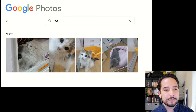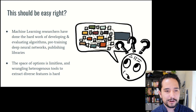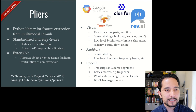What if we were able to apply this to naturalistic datasets and automatically label them? In some ways this should be fairly easy, because machine learning researchers have already done the hard work — developing and evaluating algorithms, pre-training deep neural nets, and publishing both the pre-trained networks and libraries to interface with them. The space of options is limitless, but wrangling all these heterogeneous tools with different usage patterns and installation requirements becomes a barrier. To address this, we've developed a library called pliers — a Python library for feature extraction from stimuli.